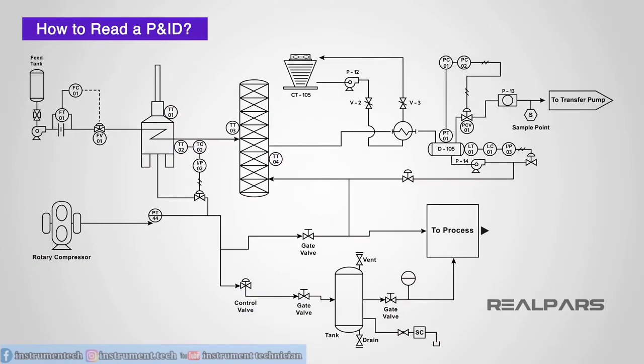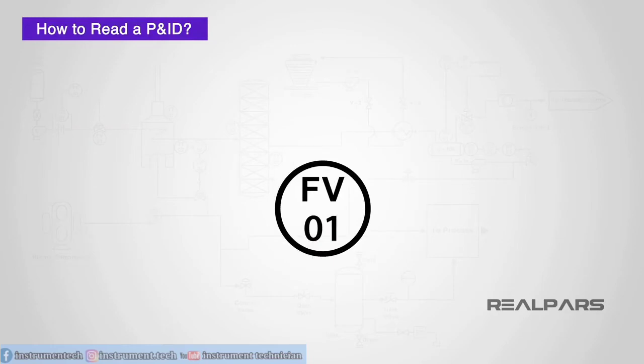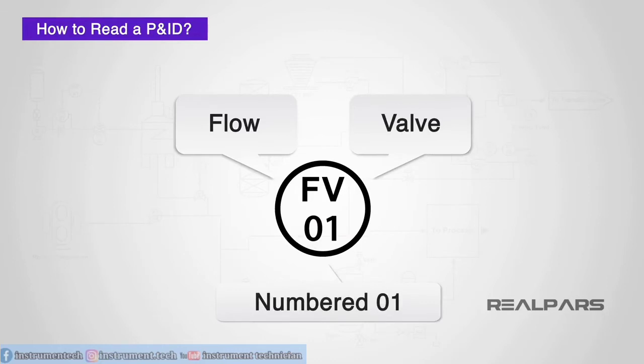Let's consider for a moment an instrument on a PNID named FV01. Looking up the code for this, we could tell this is a flow valve numbered 01.